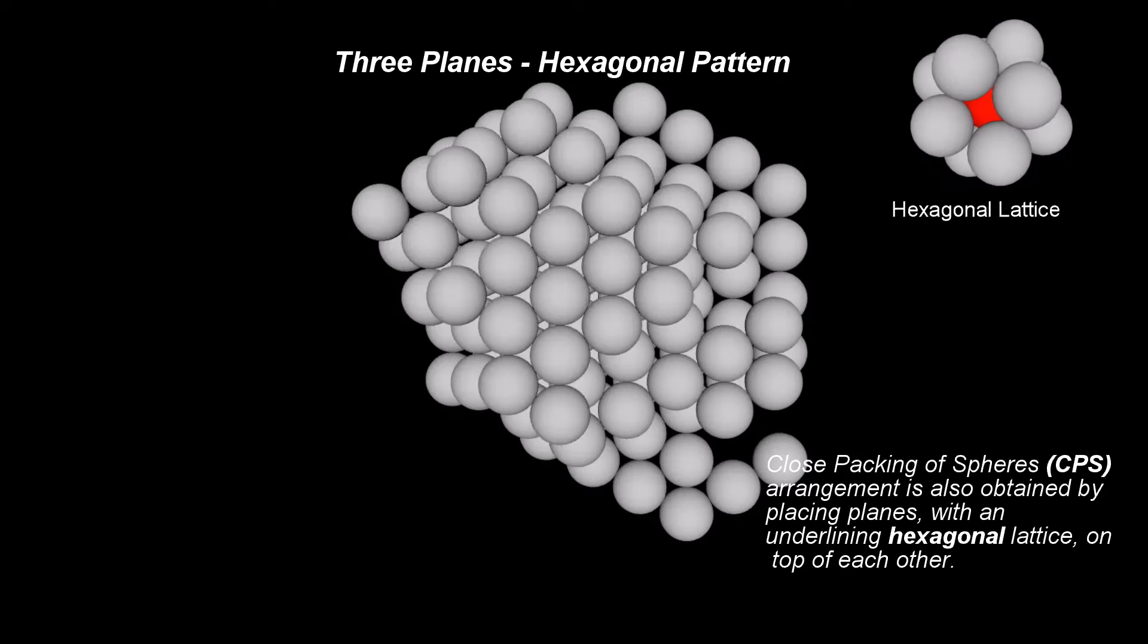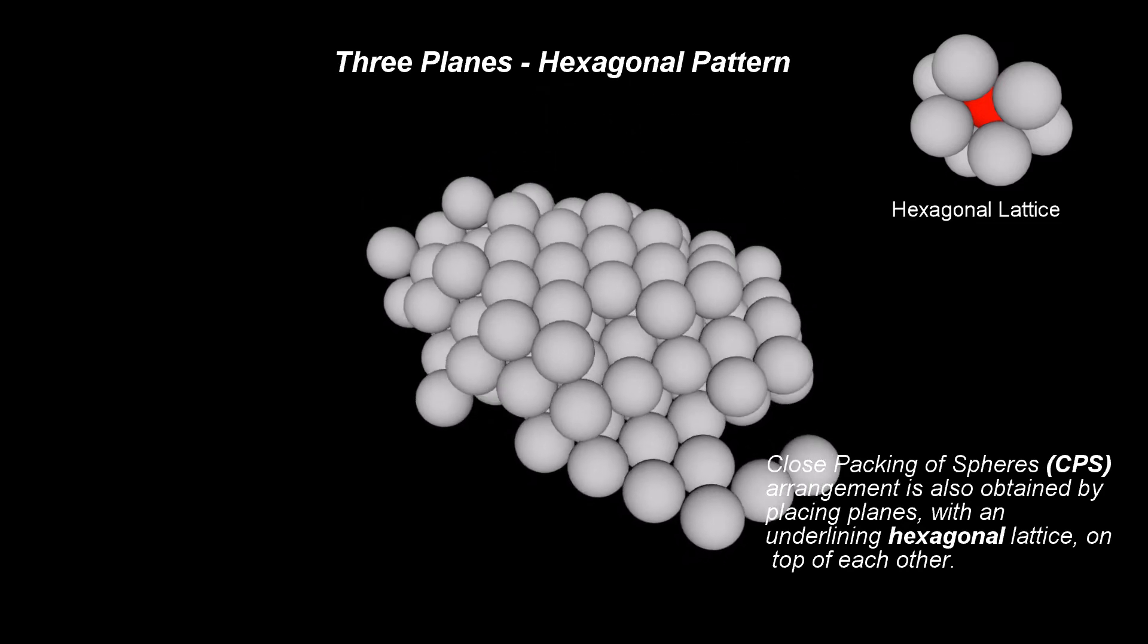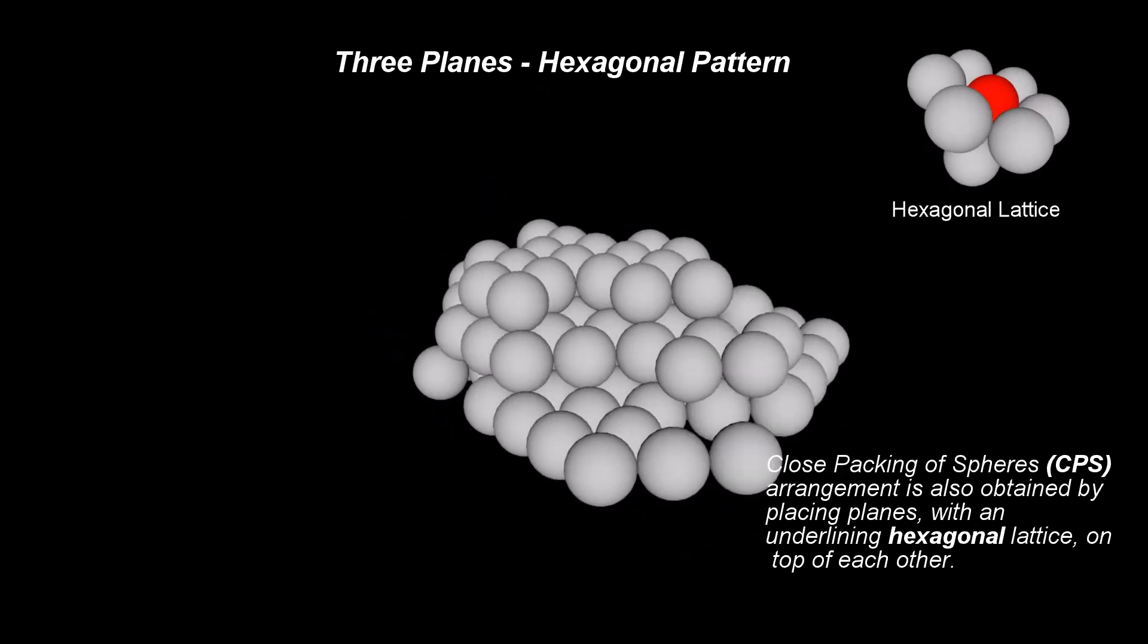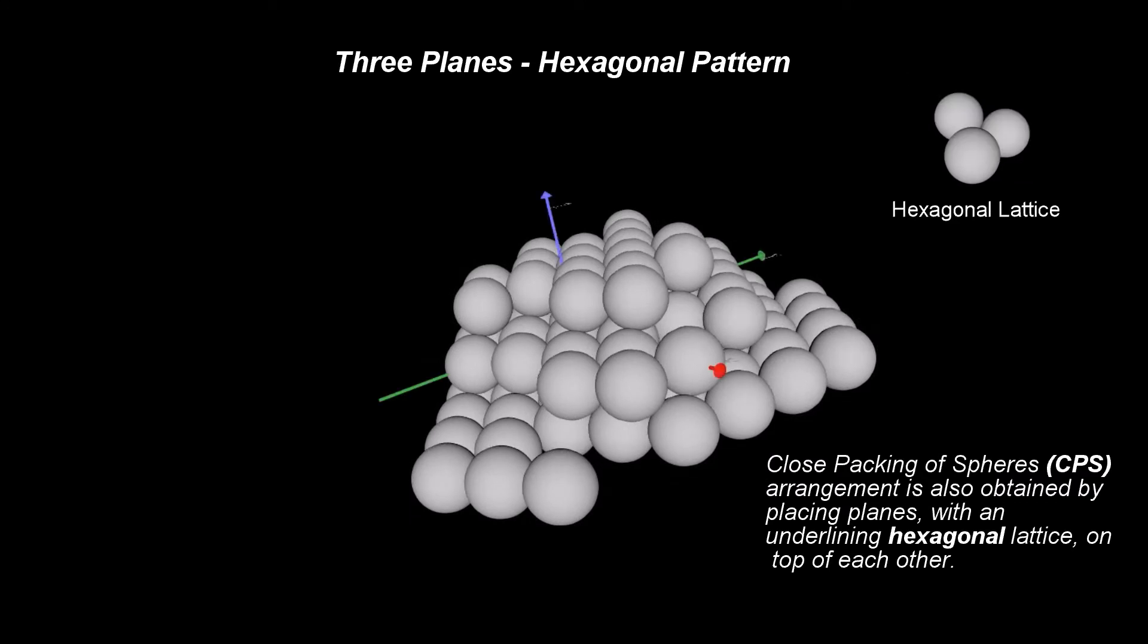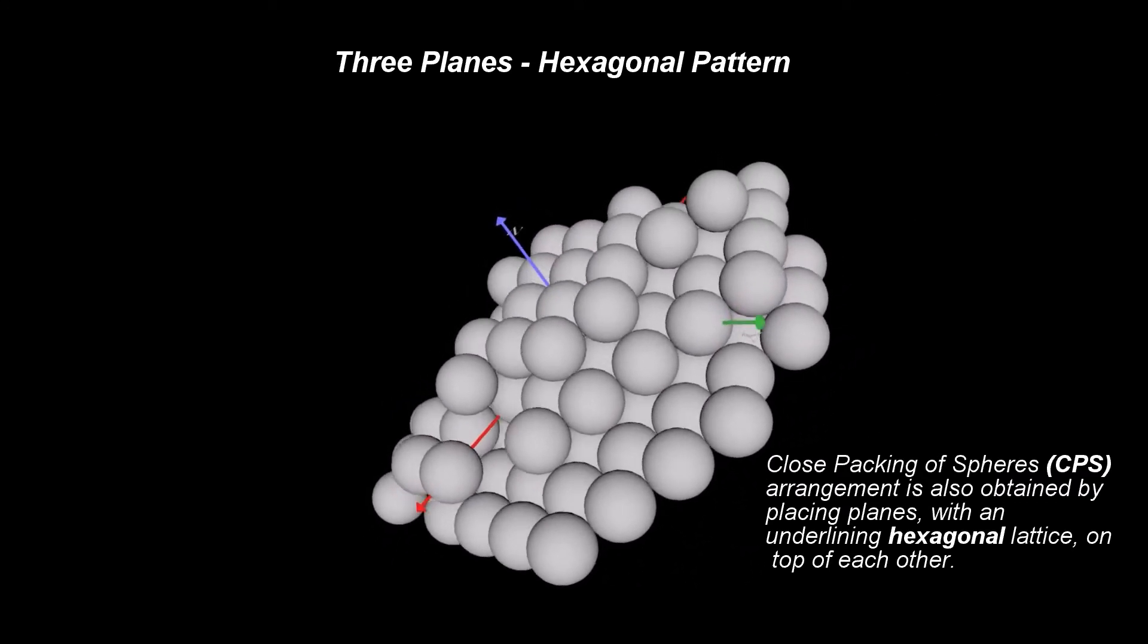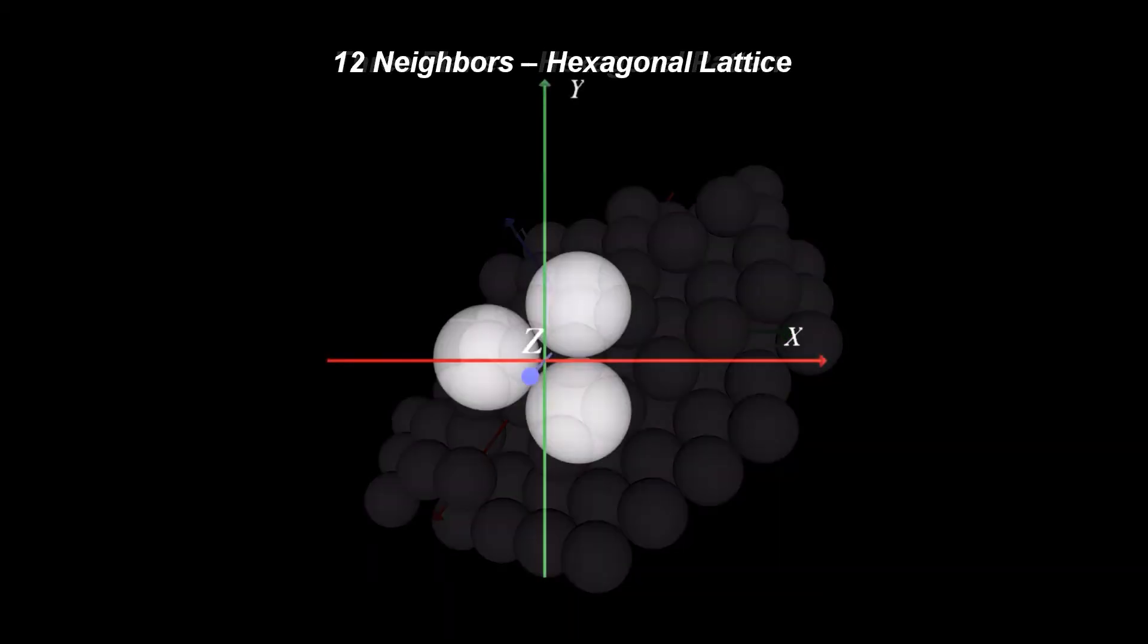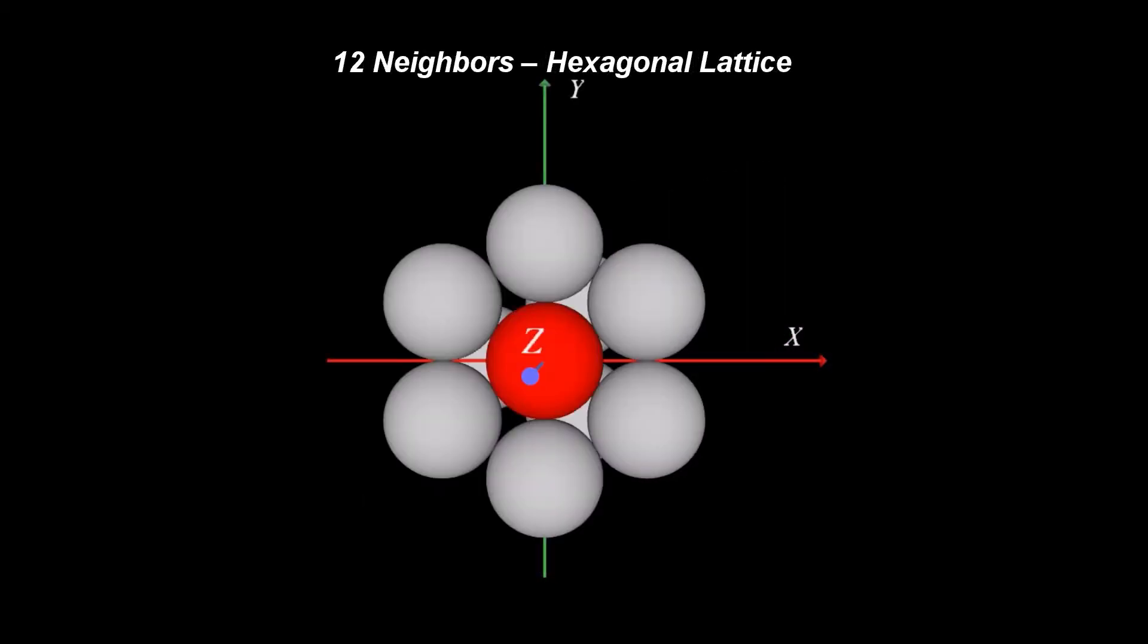The third plane follows a similar arrangement as the second plane. As seen previously in the square arrangement, again each ball in the hexagonal arrangement also has exactly 12 neighbors in space, 3 balls in the plane below, 6 balls in the same plane and 3 balls in the plane above.